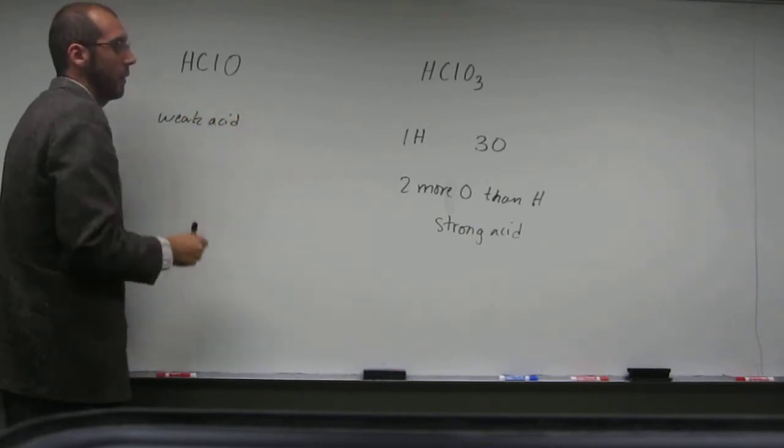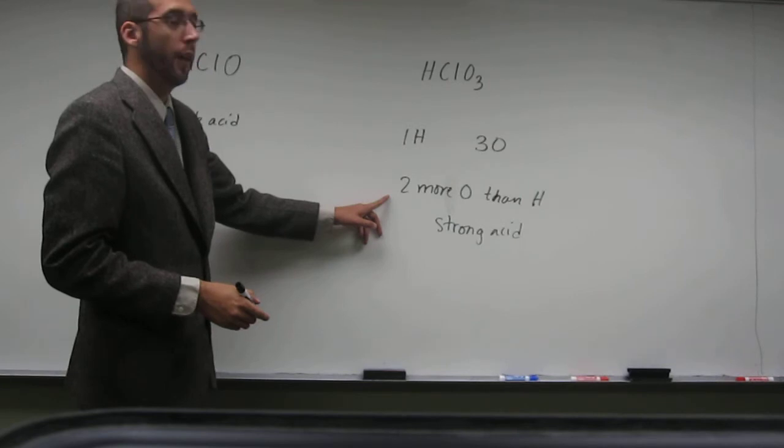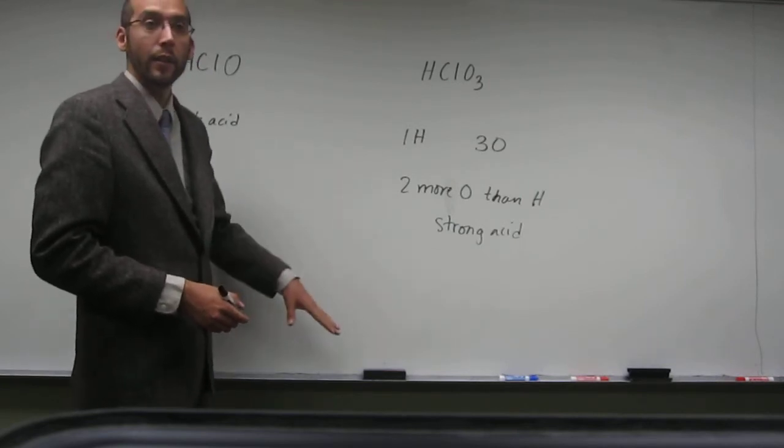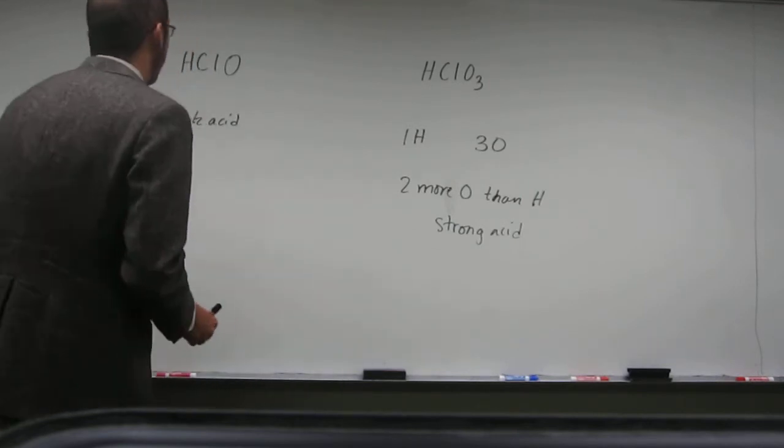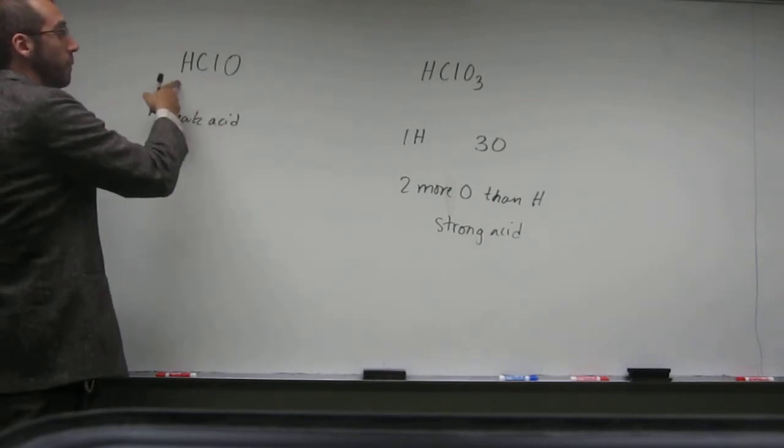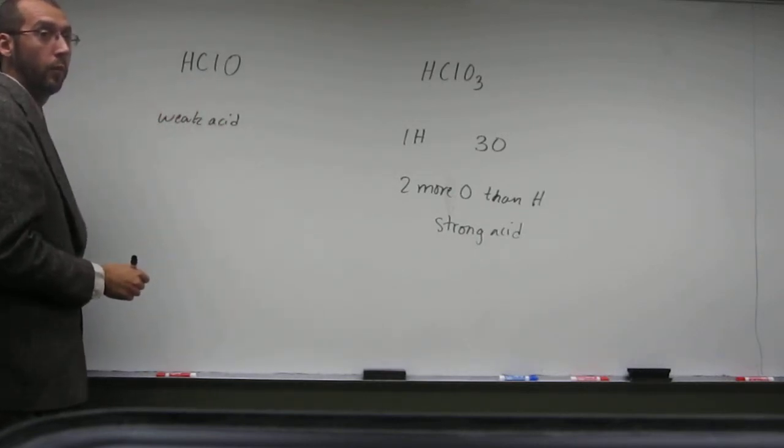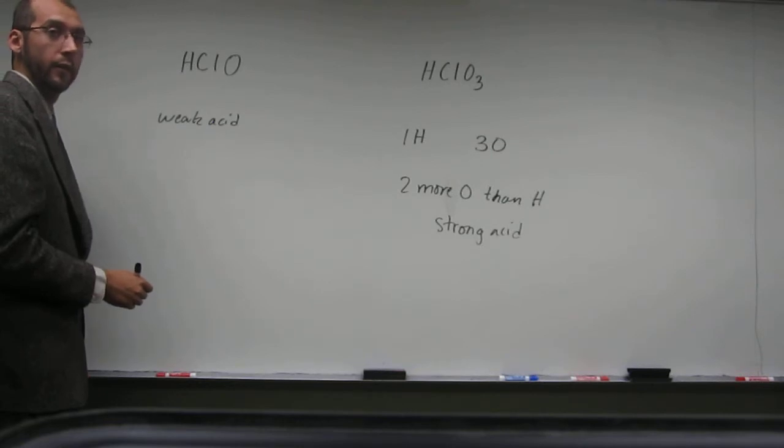And it's because of the other side of this rule. If you have less than two oxygens per ionizable proton, then you're a weak acid, okay?